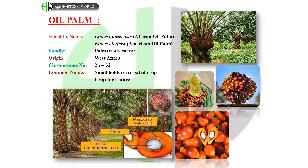Oil palm chromosome number: 2n = 32. Common names: Smallholders' irrigated crop and crop for the future.